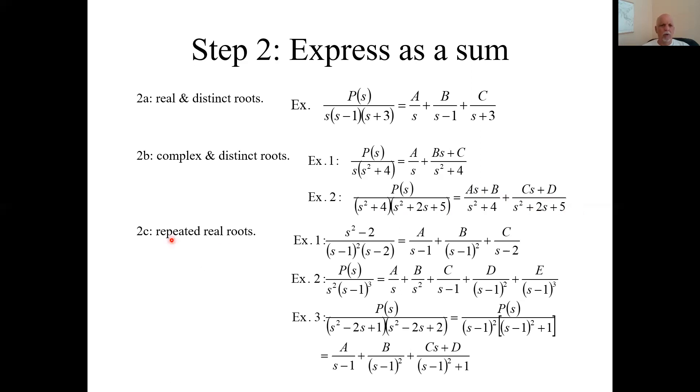What if you have repeated real roots like this here? Here the root for this term is plus one. It's raised to a power, so it's repeated. If that is the case, your sum includes all the types of terms of this from s to the one to whatever power it is. In this case, there's just two. So you have an s minus one once, another sum is s minus one squared, and you still have the s minus two term.